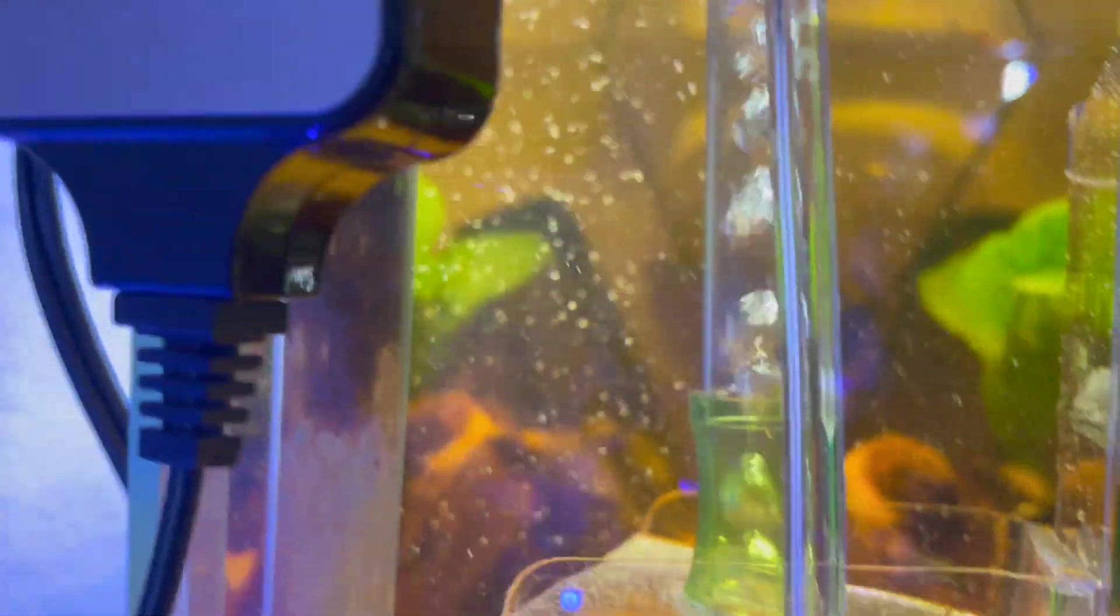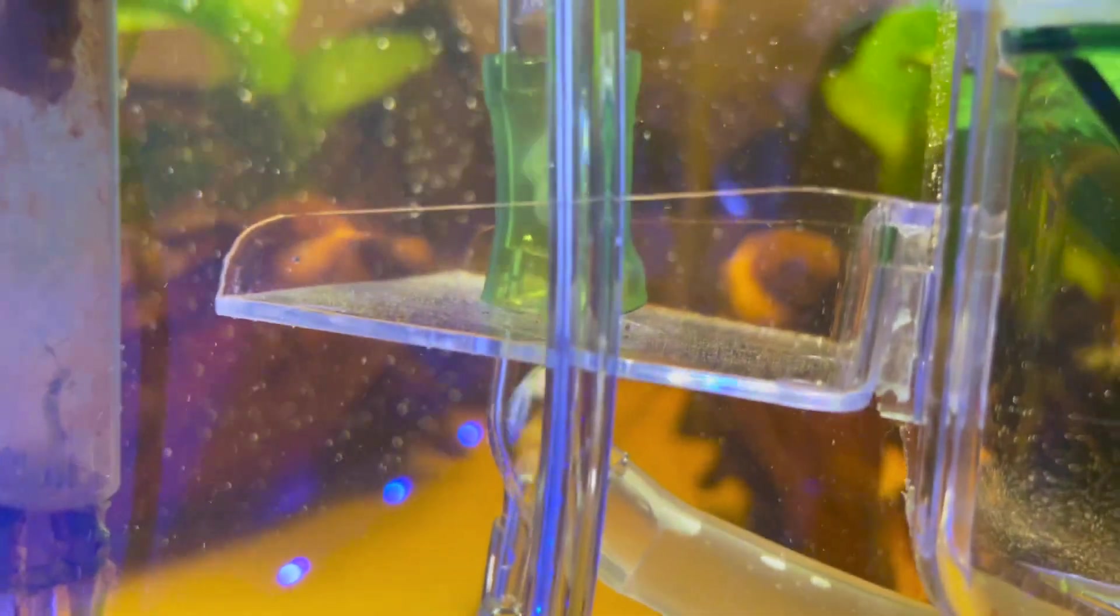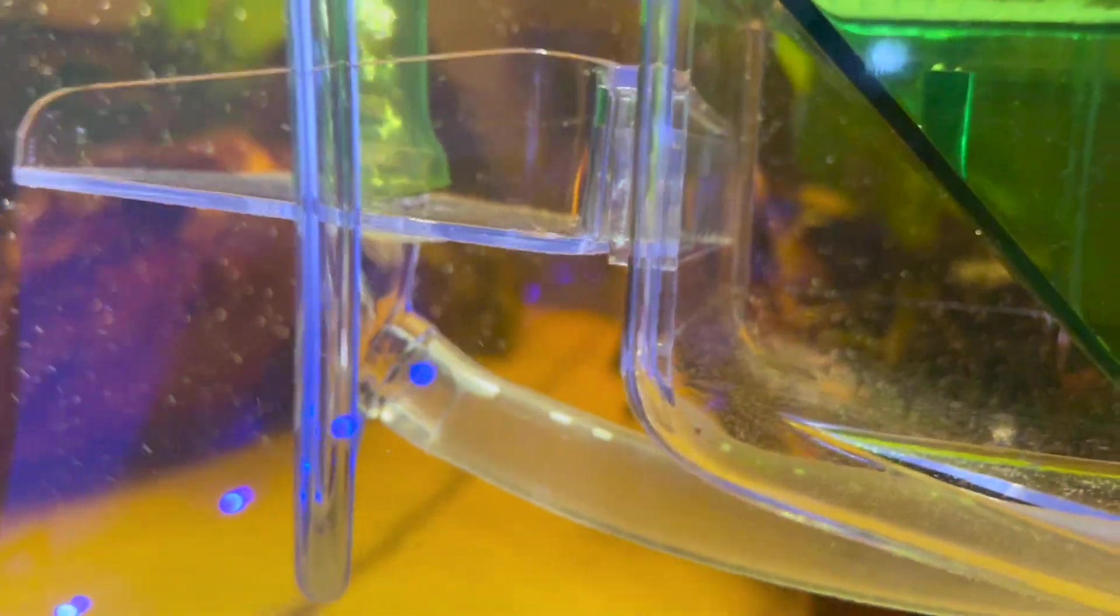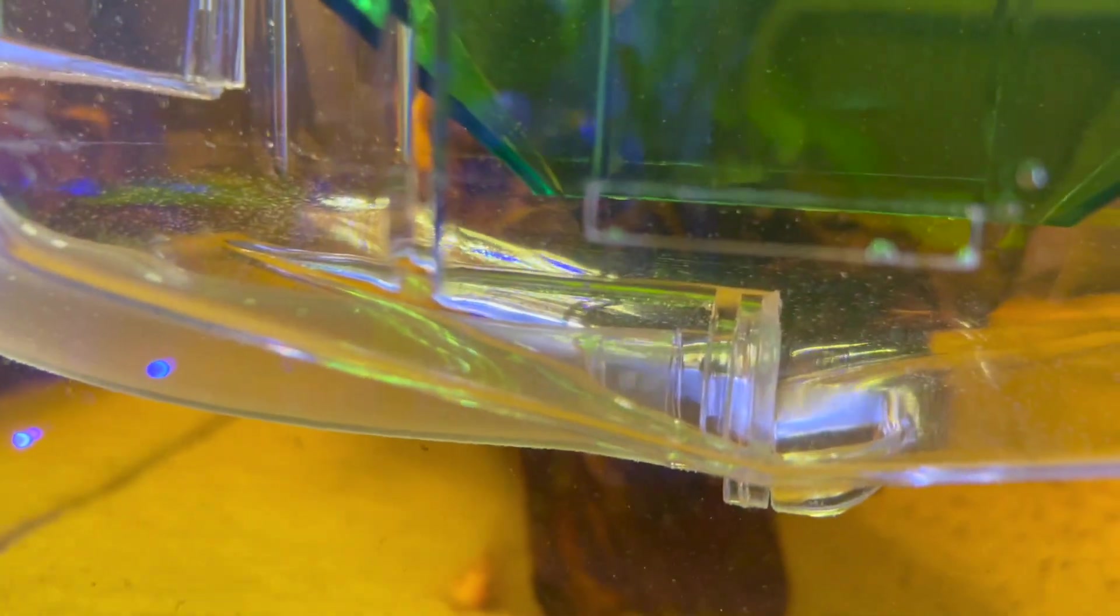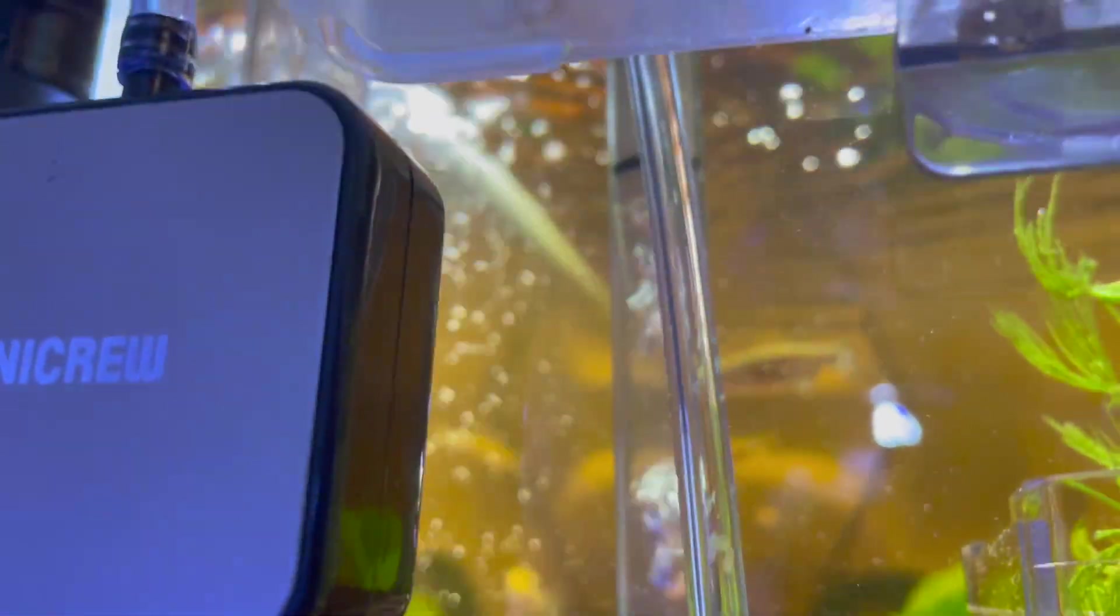There's an opening and water is constantly being pulled through there with the aeration from this Nicrew bubbler. You see the bubbles go up, but then when it's going up it's pulling all of this water down here up into this tube. And then whatever is caught in that current, it's going to get pulled up, gets pulled all the way up this pipe and then they get dumped into this container right here.